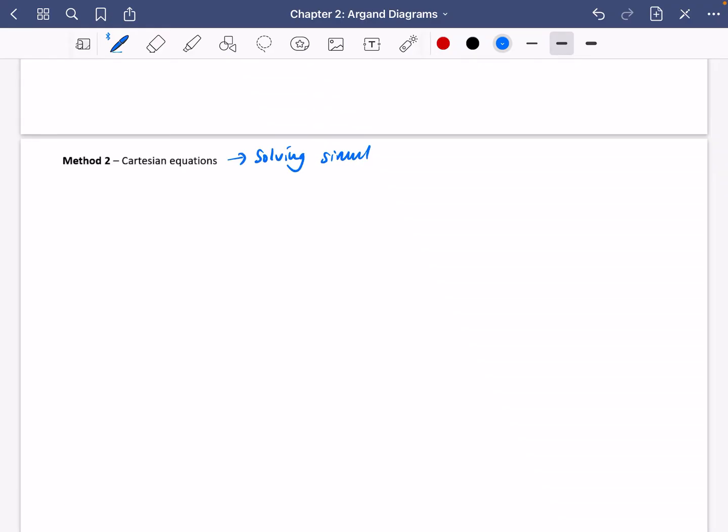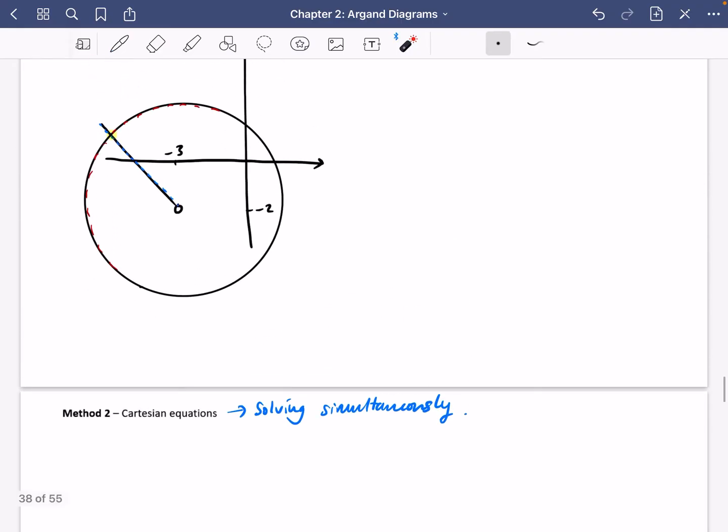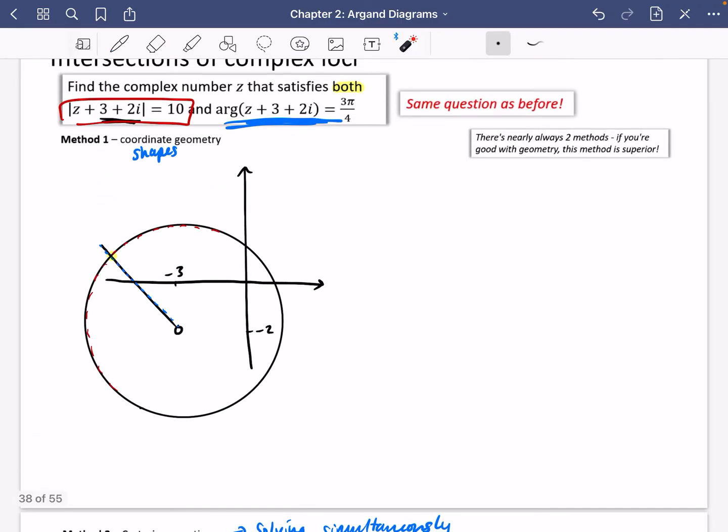Now, what I've noticed in the past is that people usually prefer to do method two because they're very comfortable with algebra. But I want to try and draw you away from that. I try and want you to think about this one more because although there's nearly always two methods, if you're good with geometry, this method is far superior and is often a lot quicker at coming to the answer and it's a lot easier to make fewer mistakes.